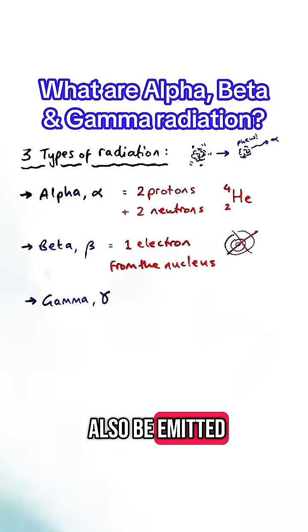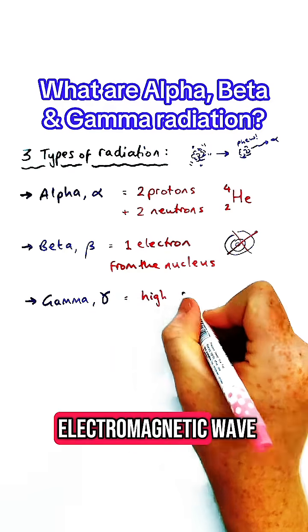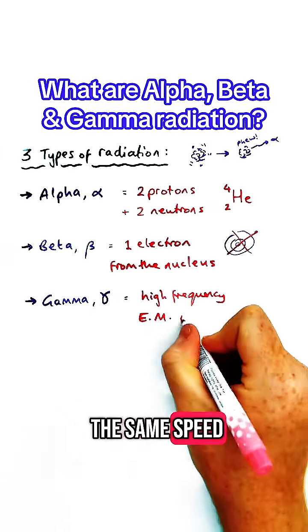Gamma radiation could also be emitted. This is a high-frequency electromagnetic wave which travels at the same speed as light.